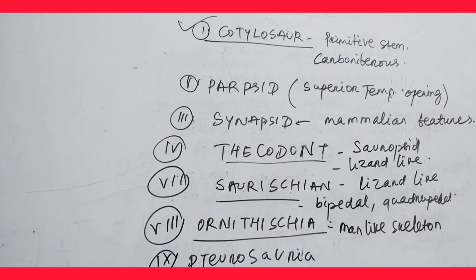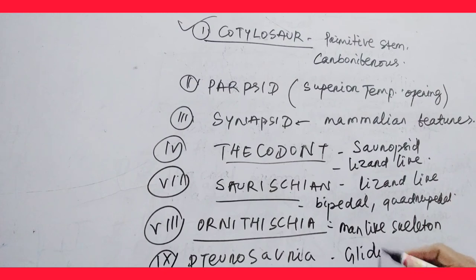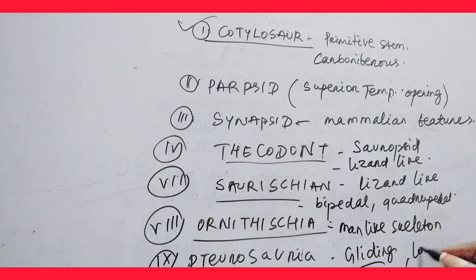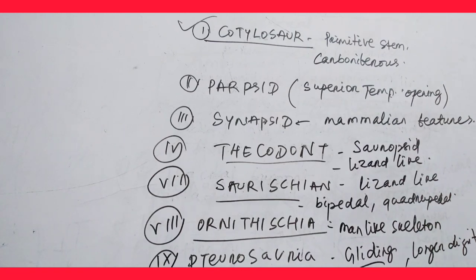Pterosauria — these are flying or gliding dinosaurs, fast-running individuals. They have pneumatic bones and their digits are extremely longer.